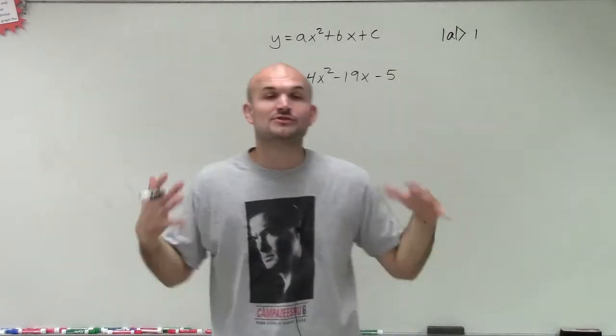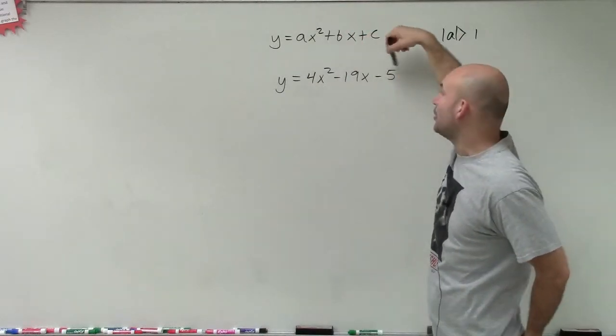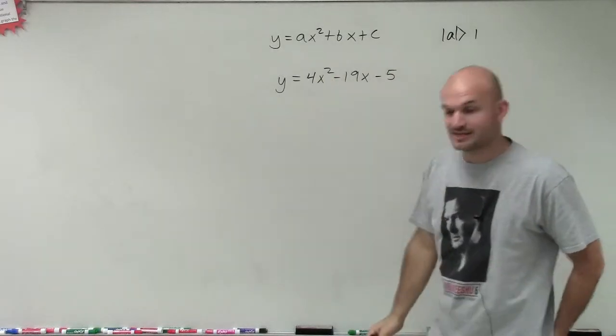The first thing we always look into is trying to factor out that a so we can get it to 1, or just factoring it out at all. But we notice we cannot factor out a 4 from the 19 or the 5, so we're going to leave the equation as is.